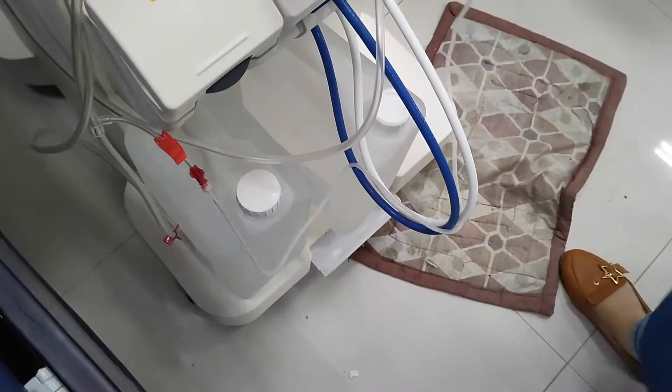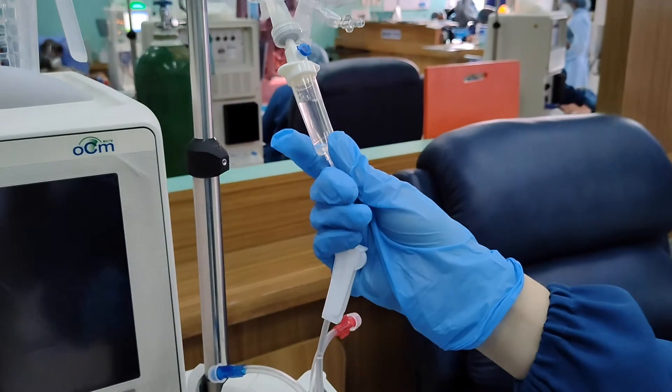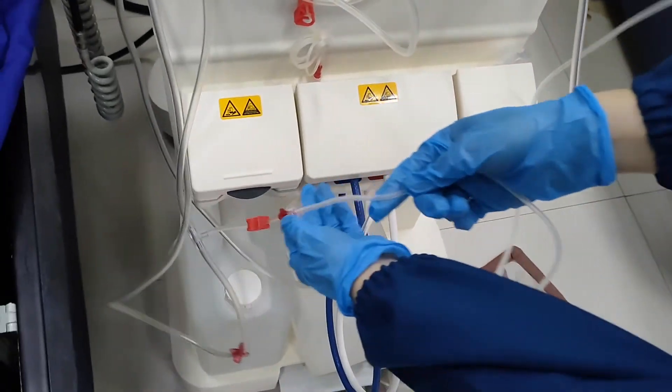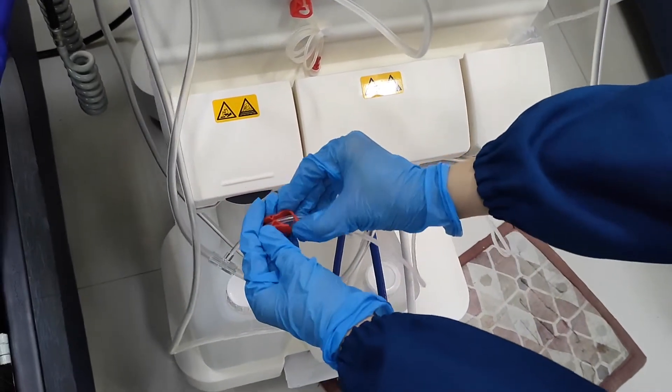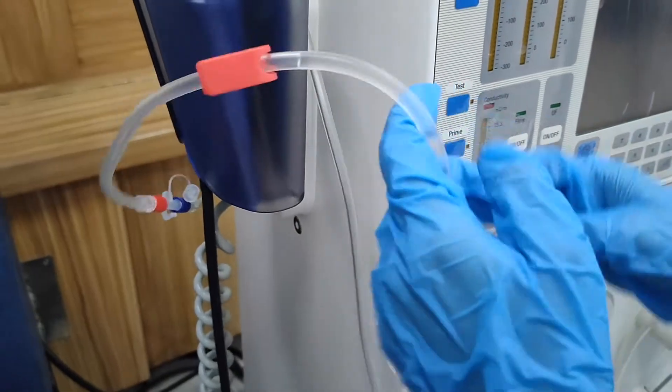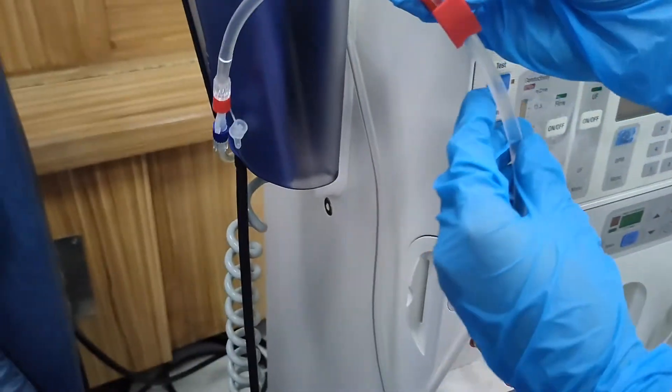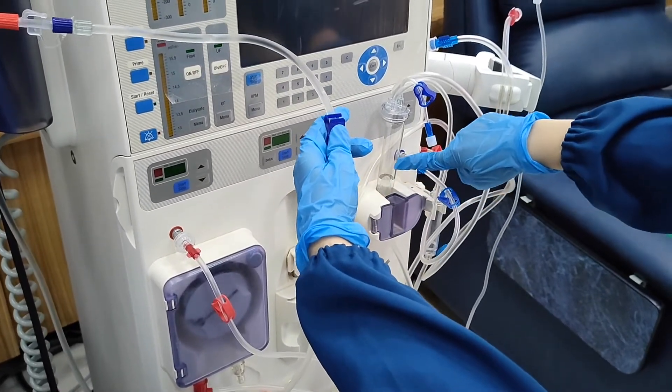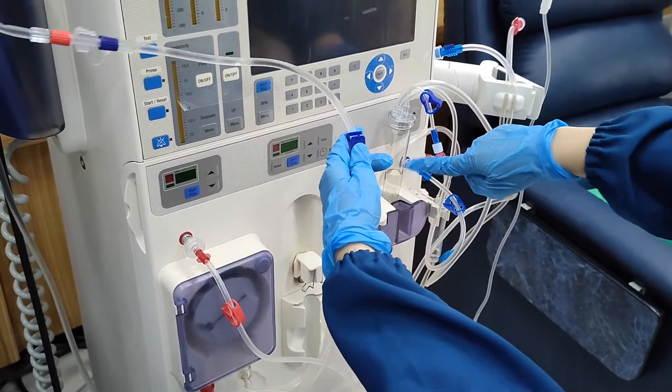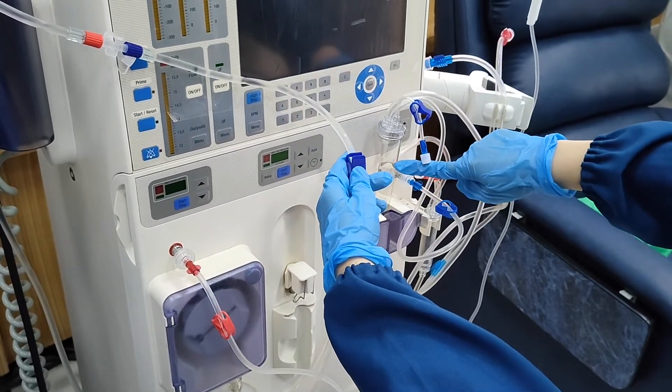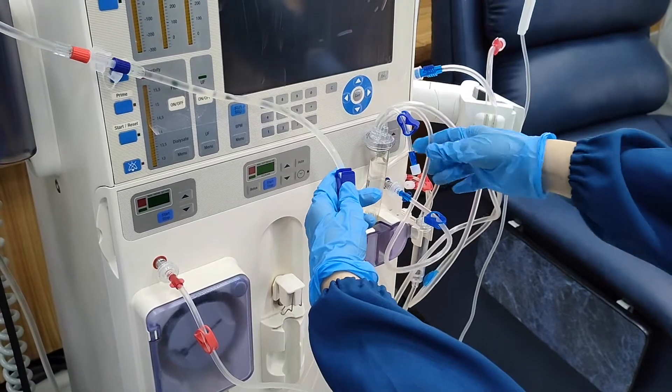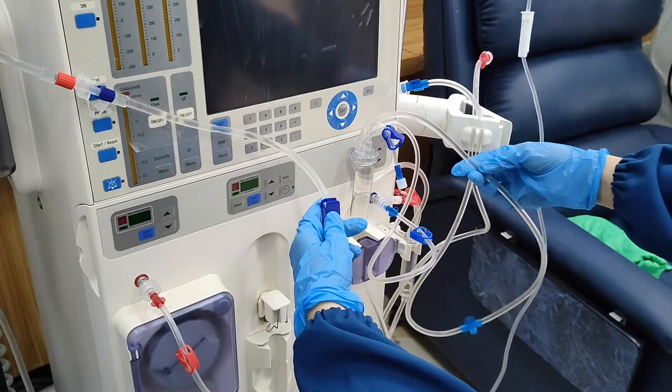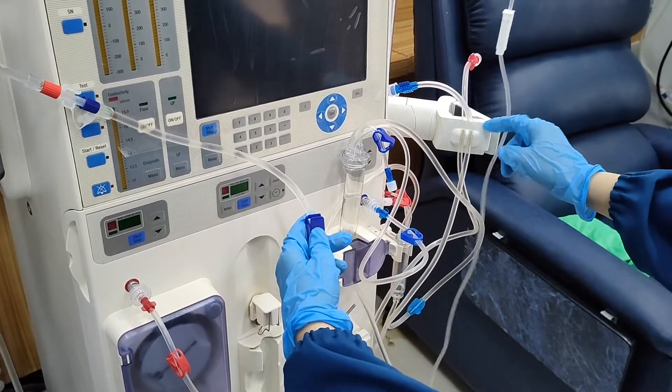Then, open the roller clamp. Then, unclamp the arterial NSS line and fill the venous line and the venous chamber by gravity. Hold the venous clamp and wait for the NSS to fill the venous dialyzer port. Then, clamp it.